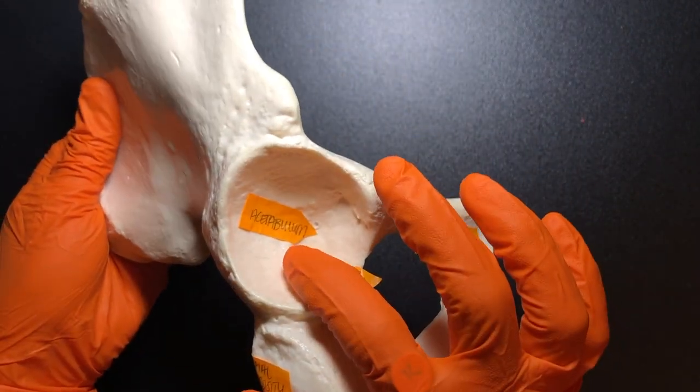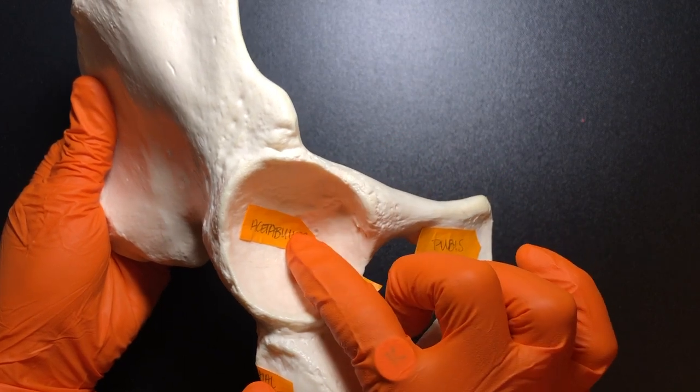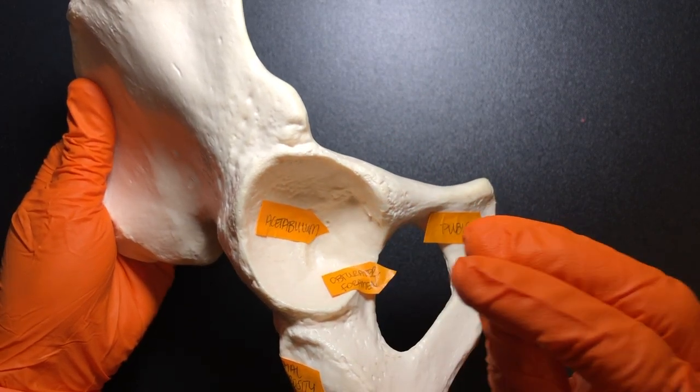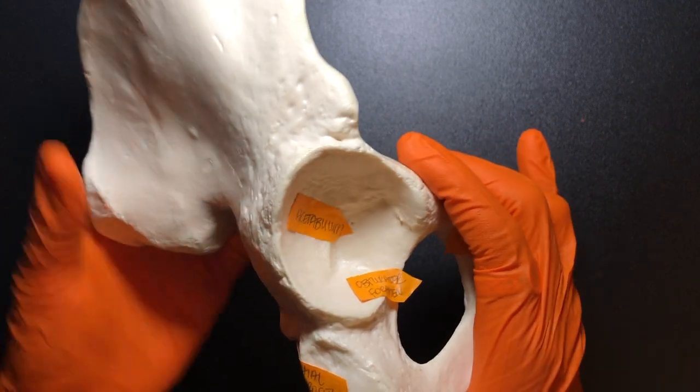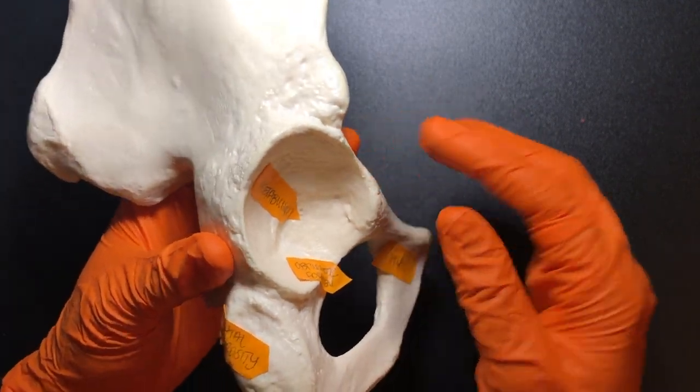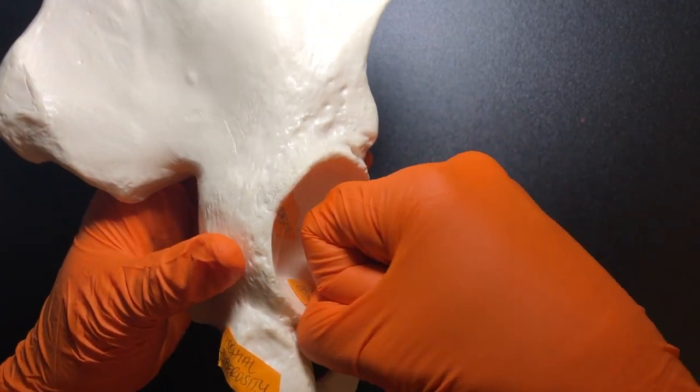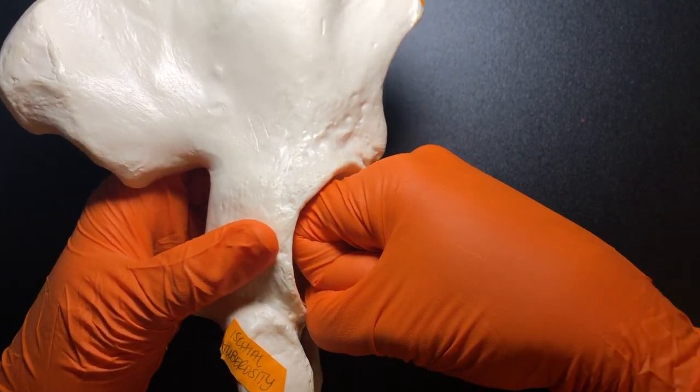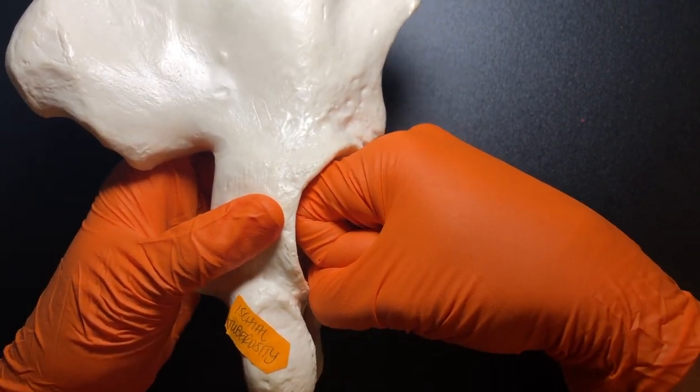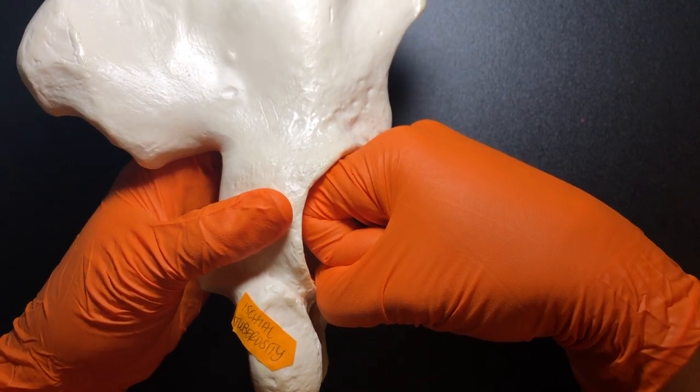Here we have the acetabulum. The acetabulum is actually the socket in the ball and socket joint of the hip. And the head of the femur is actually going to go right in there. It is a very deep ball and socket joint.